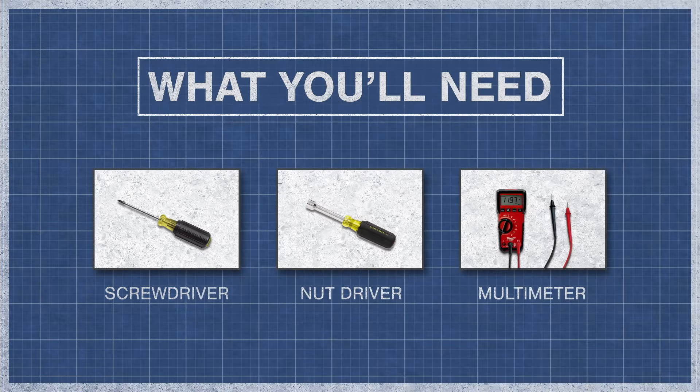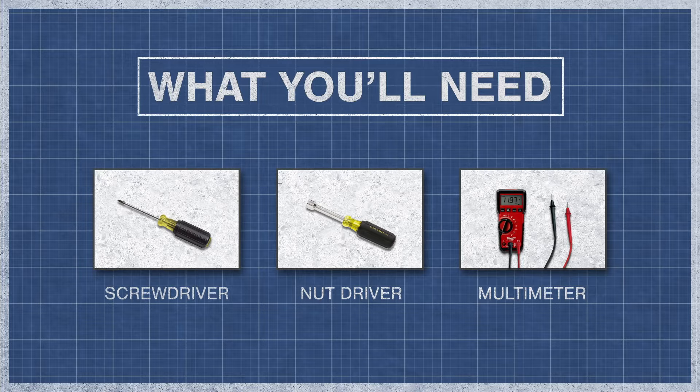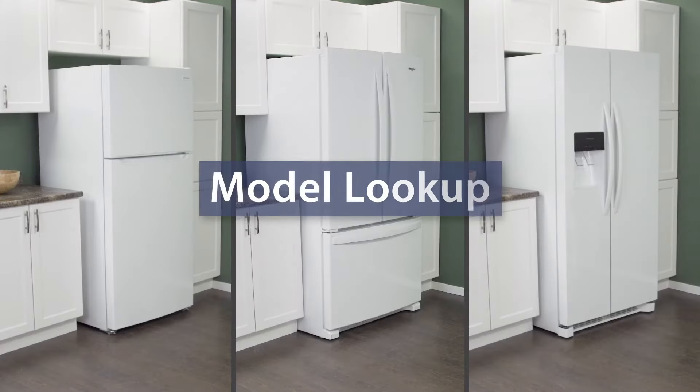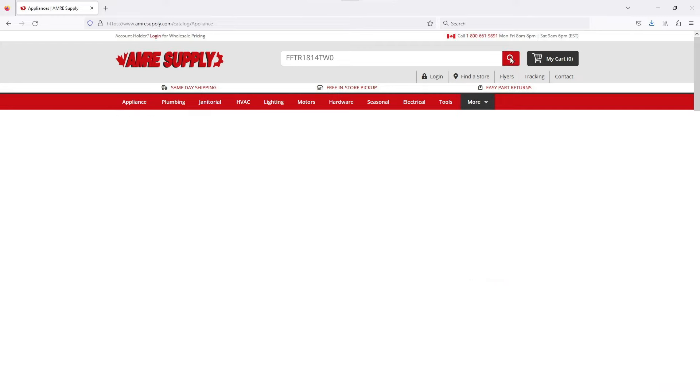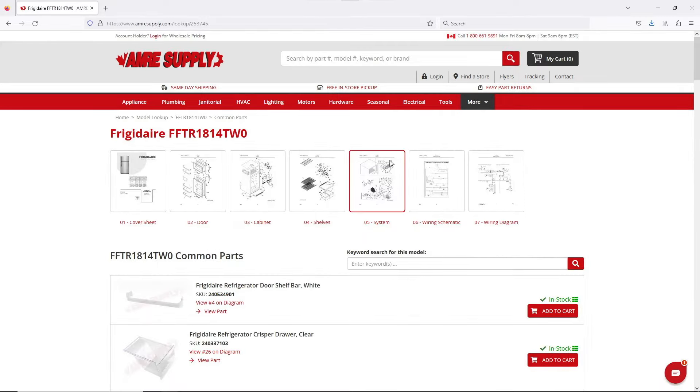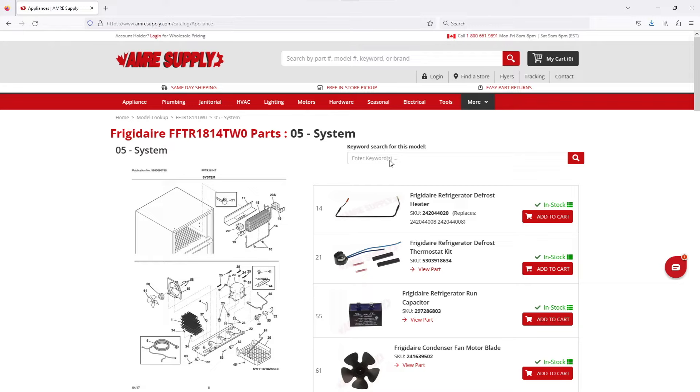To begin, you might need a screwdriver or nut driver and a multimeter. Keep in mind there is some variation between models and not all refrigerators will have the same parts. You can enter your model number on the AMRE Supply website to see a parts breakdown. This can be helpful to show you which parts are in your refrigerator and where they are located.